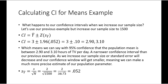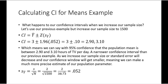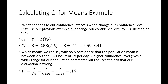This is a narrower confidence interval than our previous example because of our increased sample size. As we increase our sample size, our standard error will decrease and our confidence window will get smaller, meaning we can make a much more precise estimate of our population parameter.